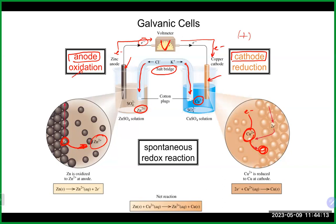Those electrons can go out and do some type of work, similar to when you put a battery in your device — the battery does a redox reaction, electrons go out and power your device. If you put the battery in backwards it doesn't work, and the same thing applies to a galvanic cell depending on which side is the cathode and which is the anode.